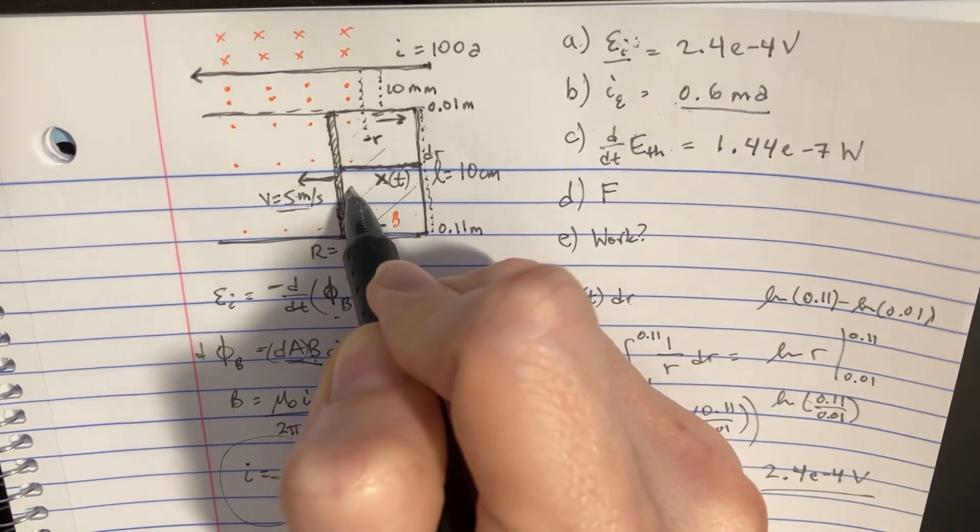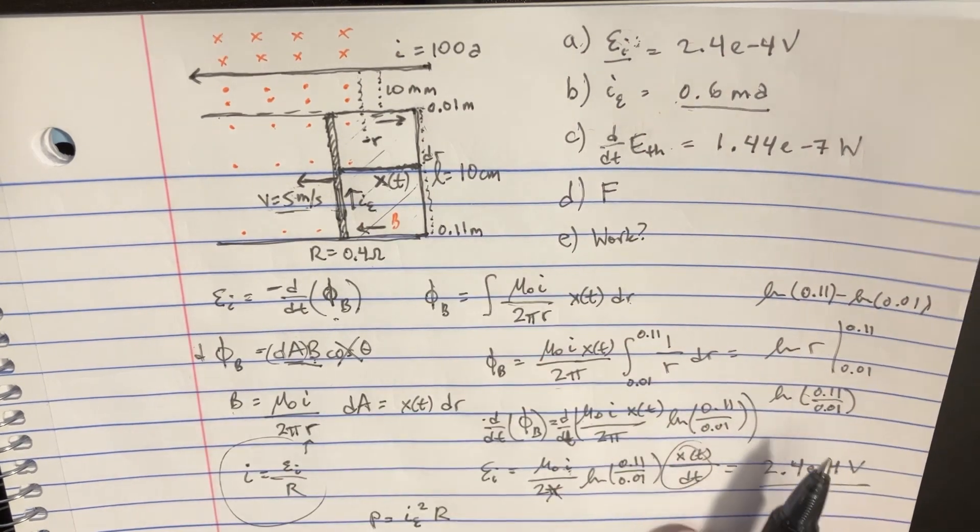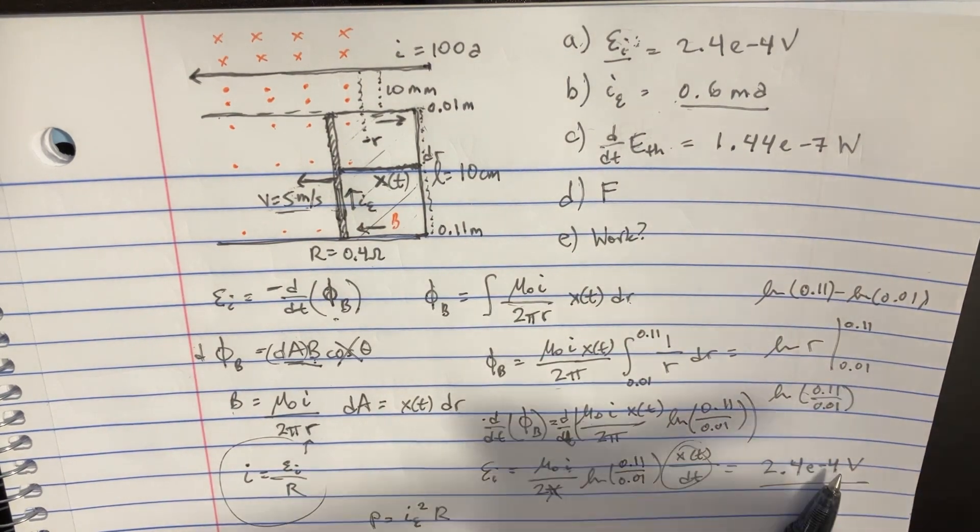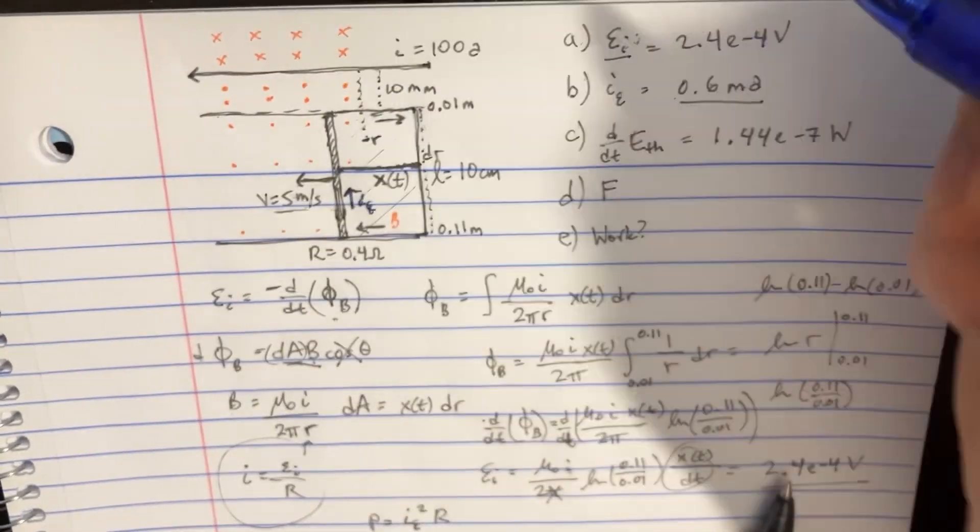So the current would be going upwards this way. This is going to be the induced current. I'm going to put that in blue just to make it a little bit less intense. That's the induced current right there.